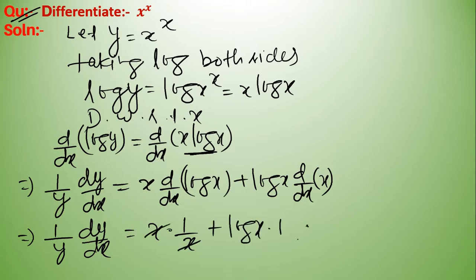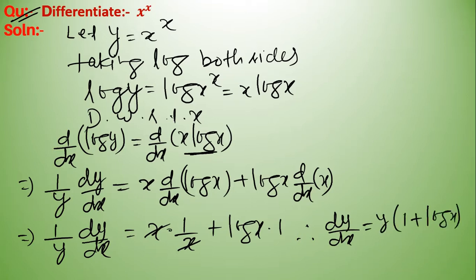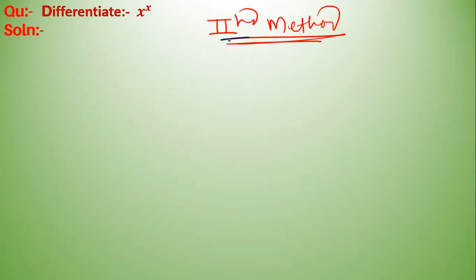This implies 1 upon y times dy upon dx equals x into 1 upon x plus log x into 1. Here x and x cancel, so therefore dy upon dx equals y into (1 plus log x), and since y equals x to the power x, the answer is x to the power x times (1 plus log x).